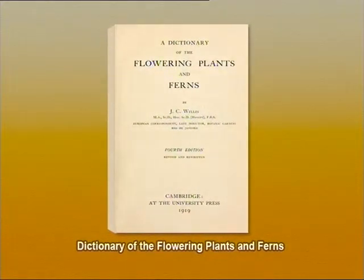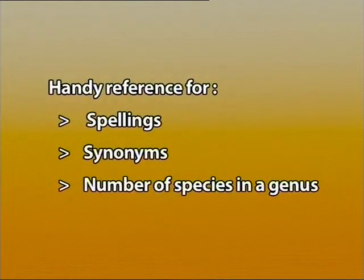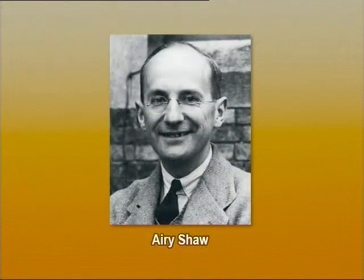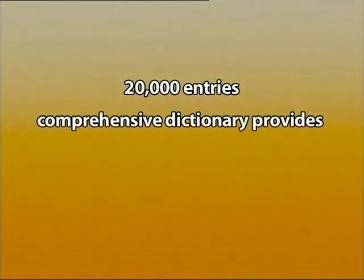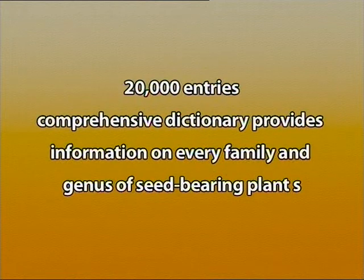We also have a few dictionaries. The prominent one is Dictionary of the Flowering Plants and Ferns — a handy reference for checking spellings, synonyms, and number of species in a genus. Originally published by J.C. Willis, the eighth edition was revised by H.K. Airy Shaw and appeared in 1973. We also have a dictionary called The Plant Book, published by David Mabberley. With over 20,000 entries, this comprehensive dictionary provides information on every family and genus of seed-bearing plants, including gymnosperms, ferns, and club mosses. Now in its third edition (2008), it provides taxonomic details and uses with English and other vernacular names, and has added more than 1,650 additional new entries including ecologically and economically important genera.